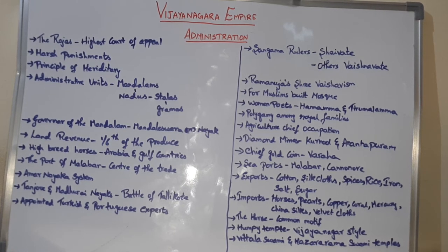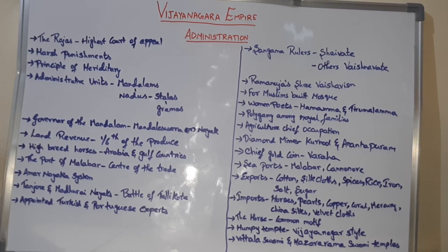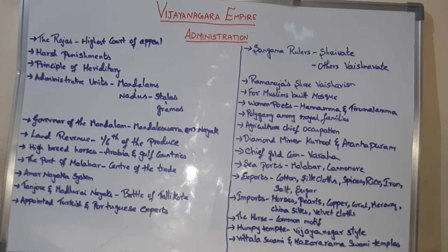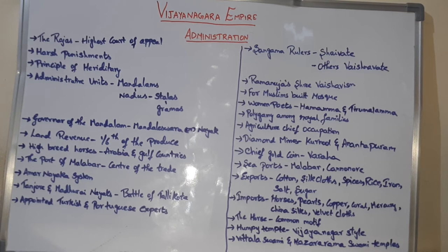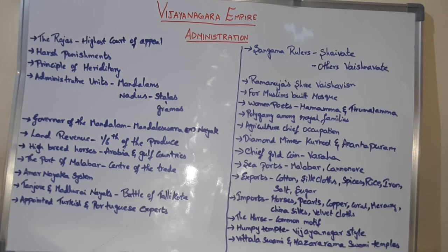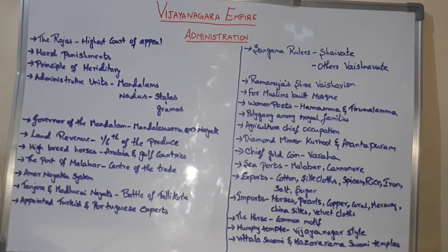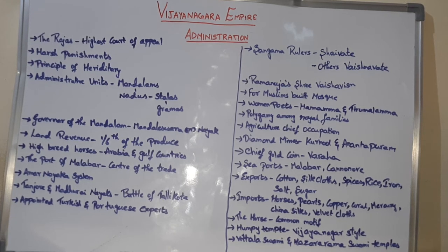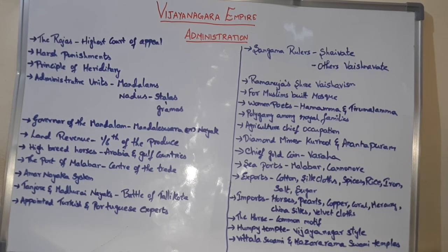There were four ruling dynasties in Vijayanagara: Sangama, Saluva, Tulu, and Aravidu. Except the Sangama rulers, the other rulers — that is Tulu and Aravidu — followed Vaishnavism. Only the Sangama rulers followed Shaivism.